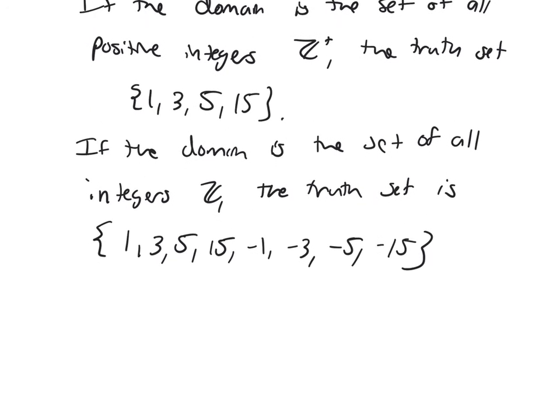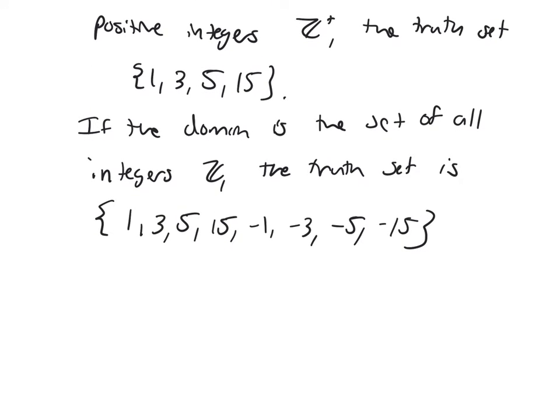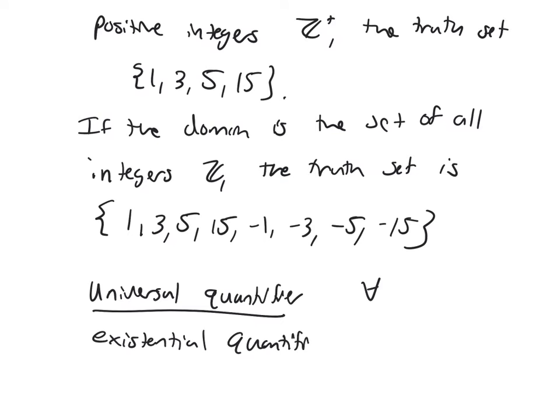After we had predicates, we can then talk about quantifiers. We have two: the universal quantifier, which we denote with this upside-down A, and we have the existential quantifier, which is this sideways E.